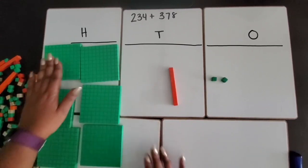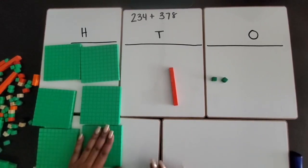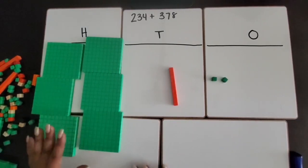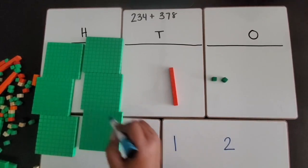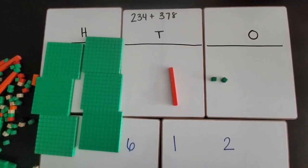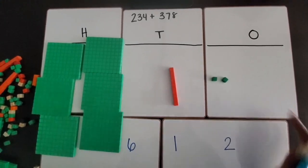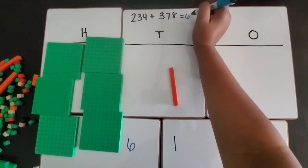Now I am going to add up my hundreds. One, two, three, four, five, six. Nothing to regroup. So altogether, I have two ones, one ten, and six hundred. So the sum is 612.